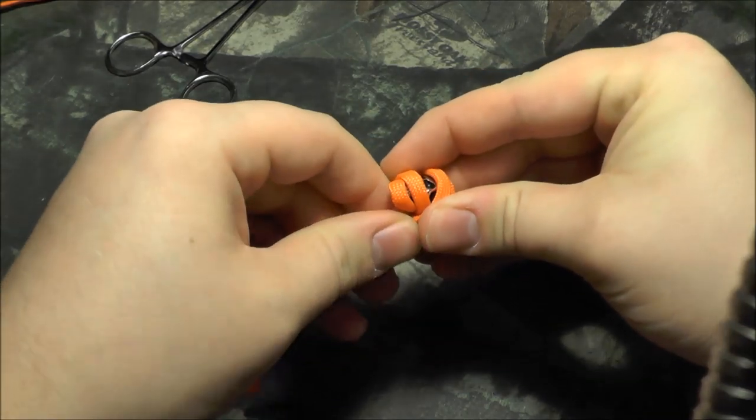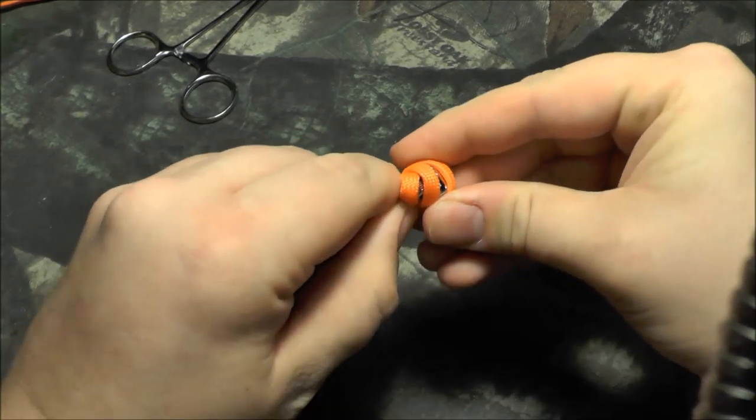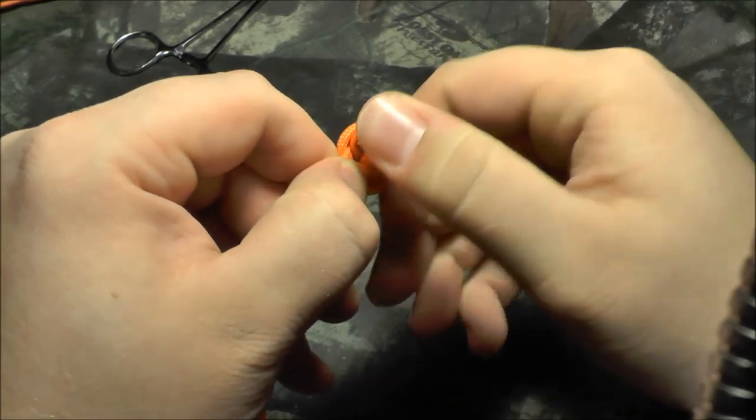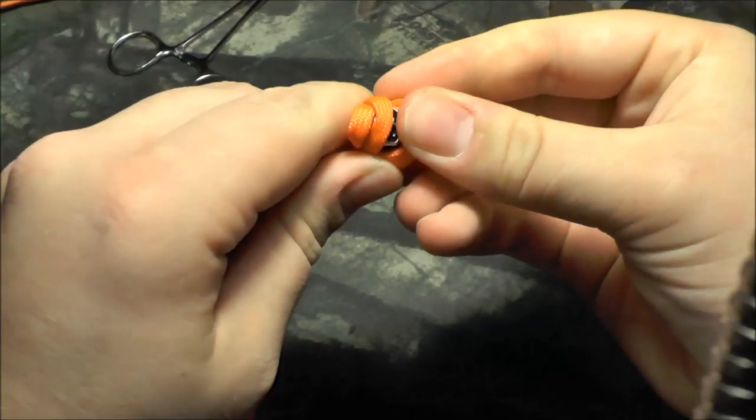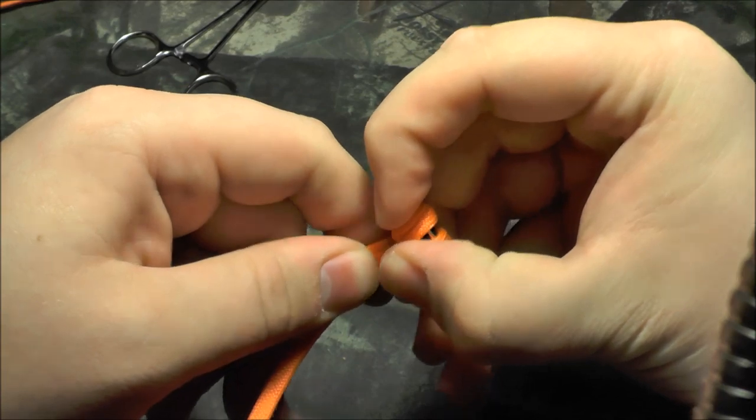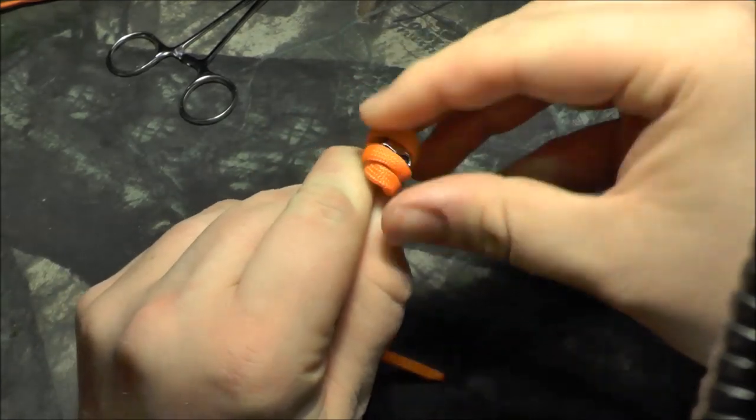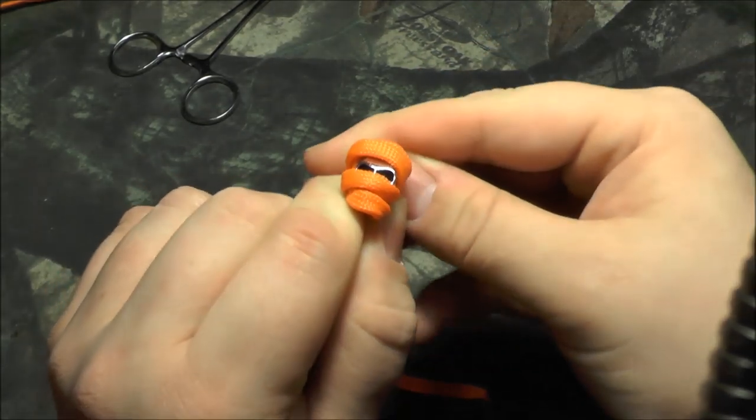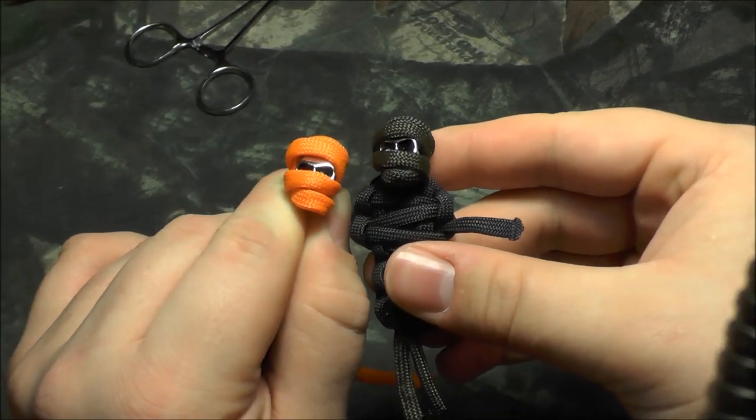Then you can kind of play with how tight it is, getting everything lined up right. As you can see here, his chin cord slipped off a little bit, so force that back up. There we go. It's not extremely perfect, but if you work it you can get it to look correct. There you go.